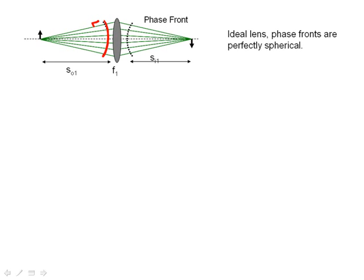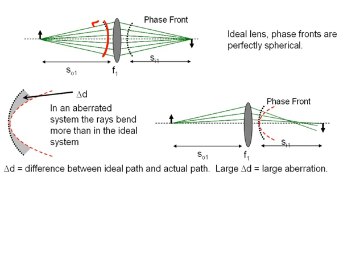So you draw a line normal to the ray, and the curve that traces out the line normal to the rays at every point is known as the phase front. And in an ideal lens, the phase fronts are perfectly spherical.